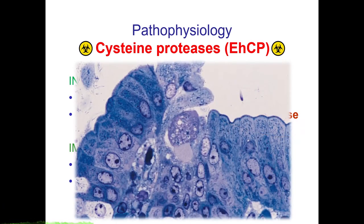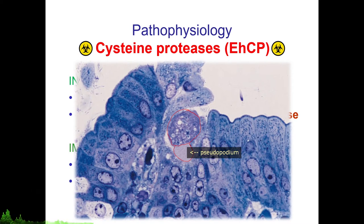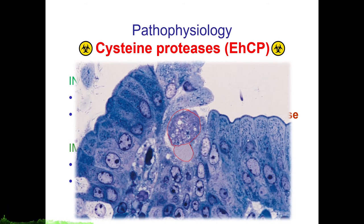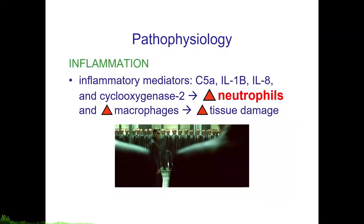Here is a picture showing the trophozoite and its protruding pseudopodium. It moves via a pseudopodium or false feet, and locomotion is actually part of the invasion process. The pseudopodium anchors to fibronectins and extracellular matrix substrates, pulling the parasite forward, and then extracellular matrix degradation occurs via cysteine proteases, metalloproteases, and hemoglobinases.